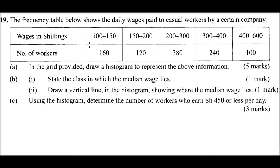We are on number 19. The frequency table shows the daily wages paid to casual workers by a certain company. Wages in shillings range from 100 to 150, 150 to 200, 200 to 300, 300 to 400, and 400 to 600. The first thing to note is that the class intervals are not equal: 100–150 is 50, 150–200 is 50, 200–300 is 100, 300–400 is 100, and 400–600 is 200.